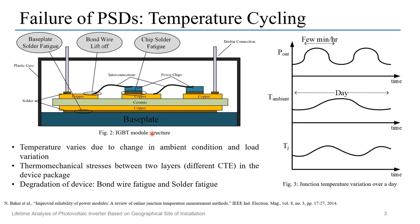Figure 2 shows the IGBT module structure. In this structure, we can see that the power chip or the silicon chip is at the top, and there are many layers of different materials and an aluminum base plate at the end. In the right side figure, we can see the power processed by the converter over the day and the change in the ambient temperature over a complete day. Both these result in temperature variation at the junction, which causes thermomechanical stresses between various layers of the structure due to different coefficients of thermal expansion. This leads to bond wire lift-off and solder fatigue, which are the main causes of degradation of the device.